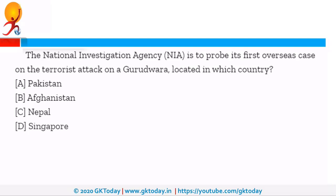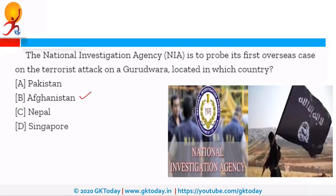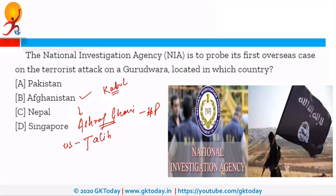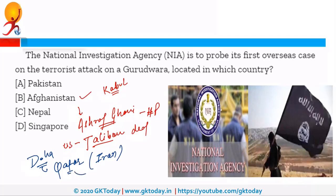The NIA — National Investigation Agency — is to probe its first overseas case on the terrorist attack on a Gurudwara located in which country? The right answer is Afghanistan. NIA is going to investigate the terrorist attack on a Gurudwara in Kabul. The capital of Afghanistan is Kabul, and recently Ashraf Ghani was re-elected as president. Afghanistan was also in news because of the US-Taliban peace deal — Taliban is a militant group and this deal was signed in Doha, Qatar. Australia recently replaced Qatar and became the largest exporter of LNG, and India's first LNG bus service was started in Kochi, Kerala.